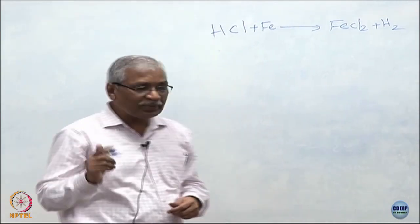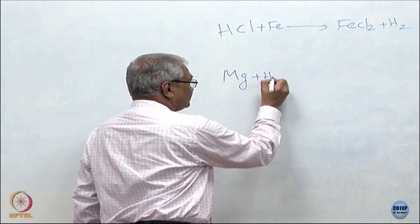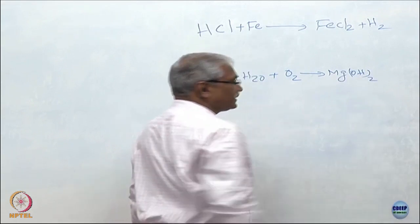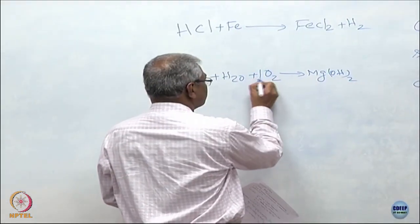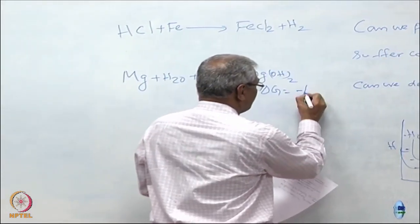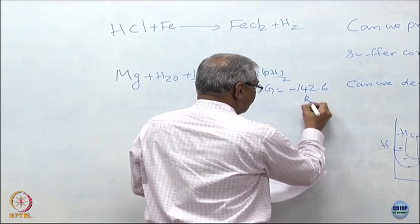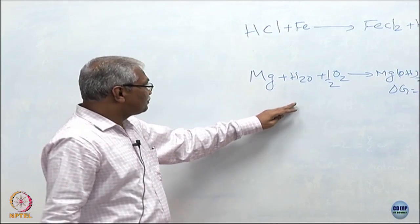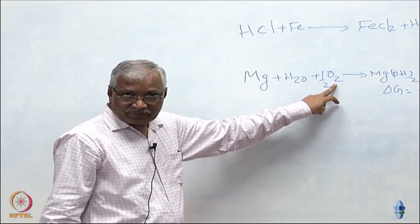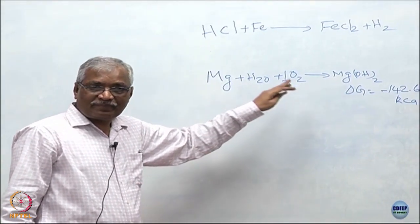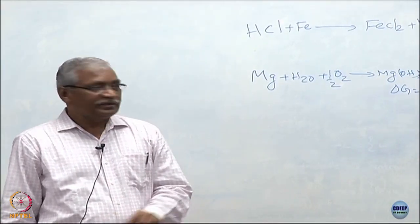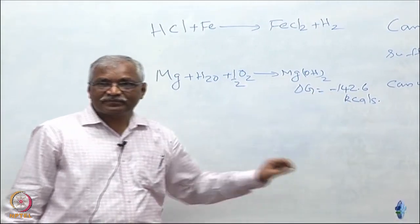An obvious example is magnesium in water reacting with dissolved oxygen to form magnesium hydroxide. The free energy change delta G for this reaction is minus 142.6 kilojoules. So we can say that magnesium will for sure corrode when exposed to water with dissolved oxygen. The free energy change for that is negative, so confidently you can say the reaction occurs.